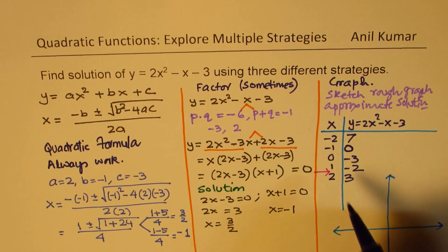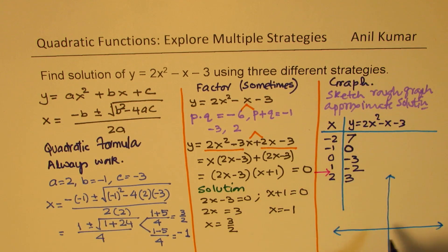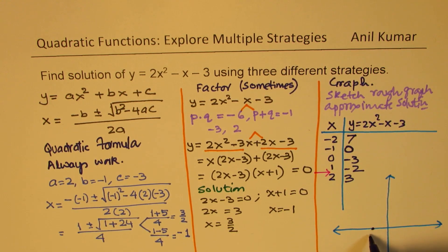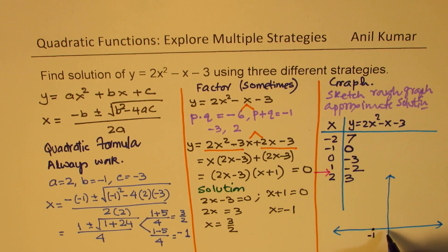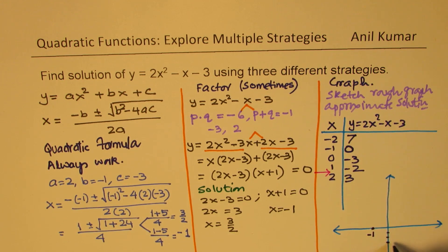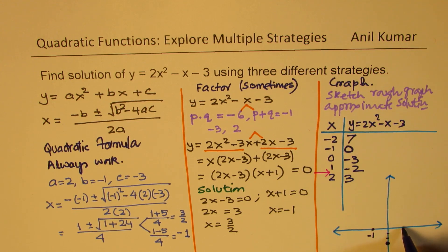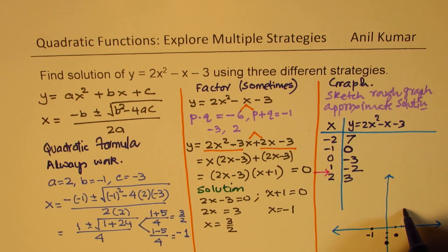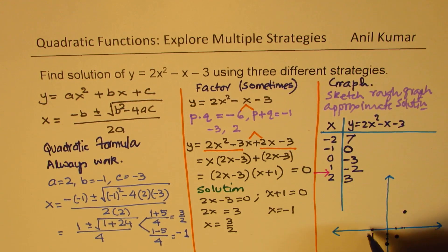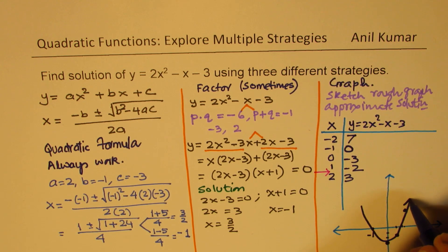So we have our points. At minus 2, we have 7, which is a big value. At minus 1, we have 0. So let's say this is minus 1. We have 0 here. Now at 0, we have minus 3. So we have 1, 2, 3. So we have minus 3 at 0. At 1, we have minus 2. So at 1, we have minus 2. Let's say this point. And at 2, so this is 1. At 2, we have 3 here. So we have 3 at 2. So we do have a parabola which kind of opens like this. So that's a rough sketch.